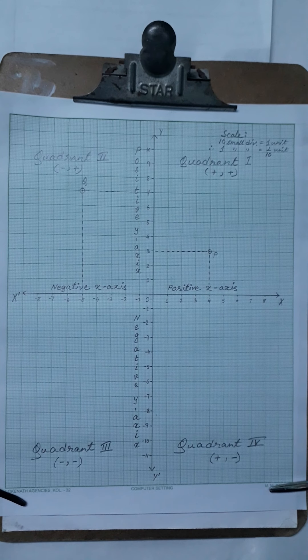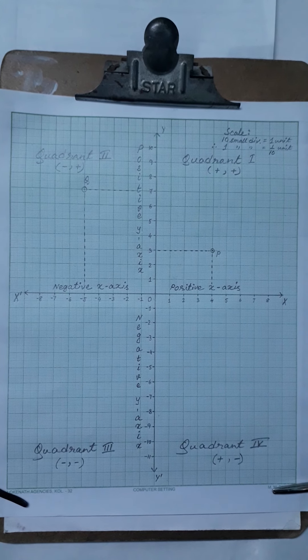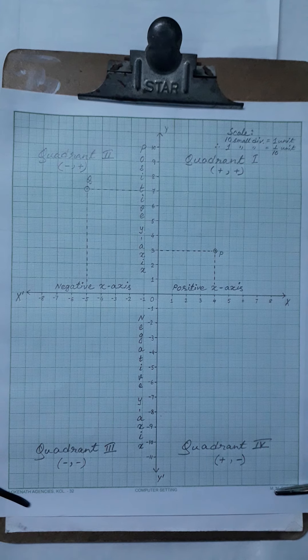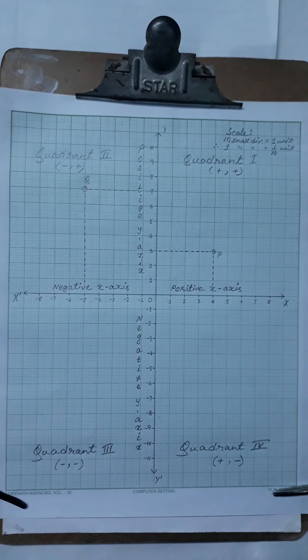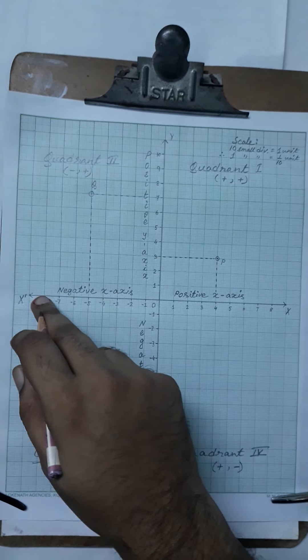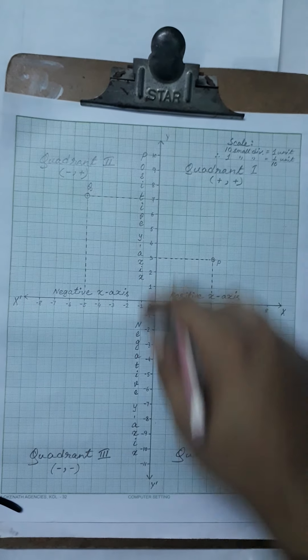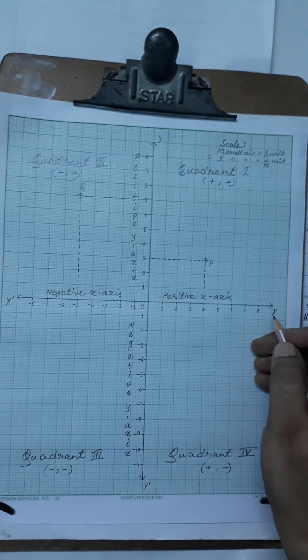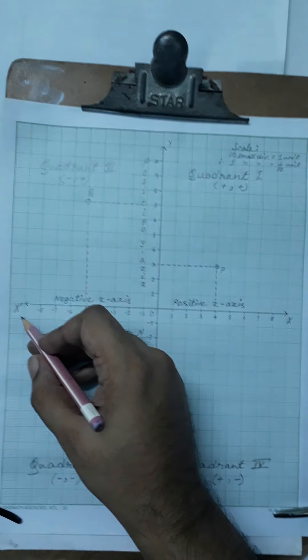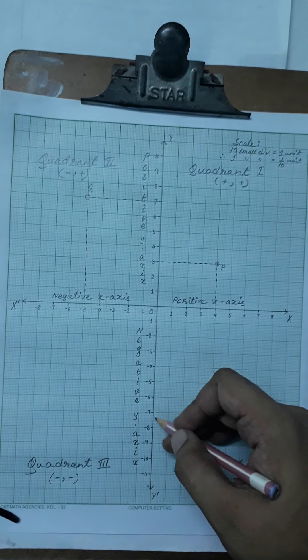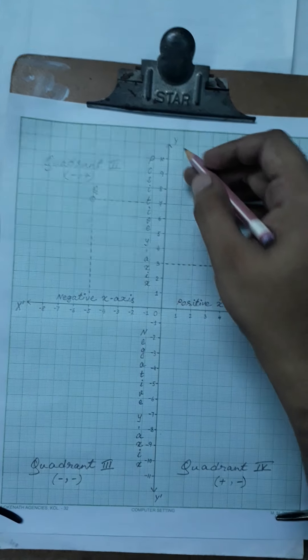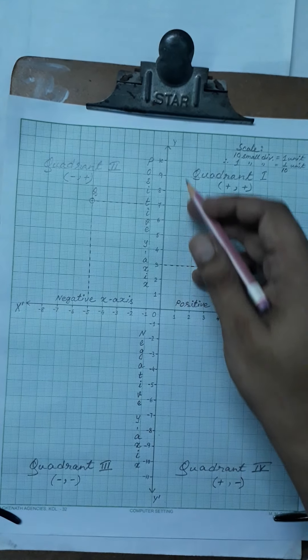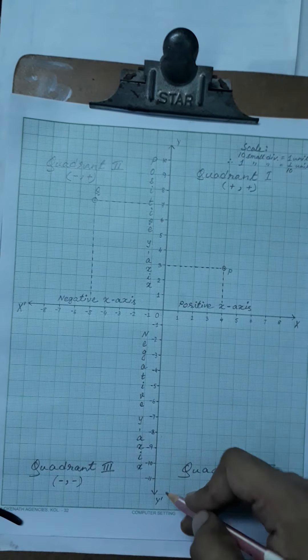The graph is nothing but a system of two number lines — one is a horizontal number line and the other is a vertical number line. The horizontal number line is called the x-axis or XOX', and the vertical number line is called the y-axis or YOY'.